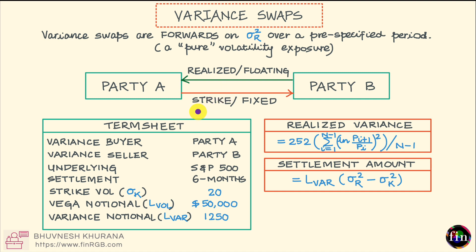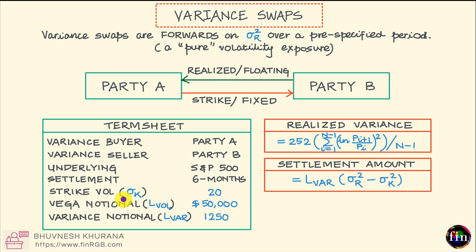Let's say those calculations result in a strike variance of 0.04, which means the strike volatility is 0.2, or 20 percentage points. Party B then asks party A what size of trade they are looking for. Party A has done its calculations and is looking for a profit of $50,000 if the realized volatility ends up one percentage point above the strike volatility. This number is referred to as the vega notional, so party A specifies a vega notional of $50,000.